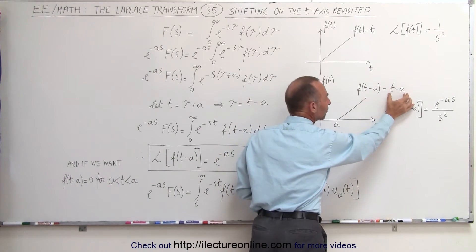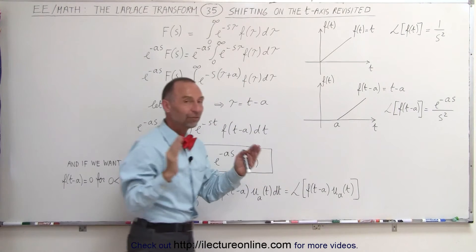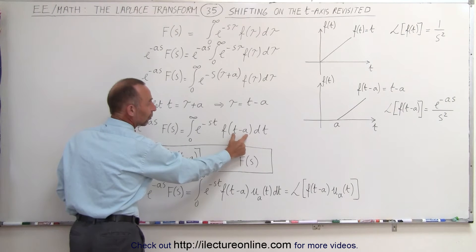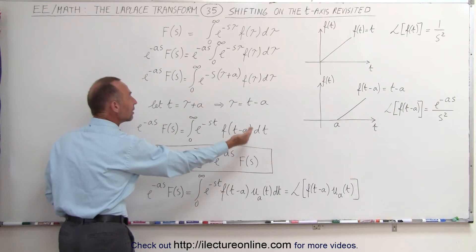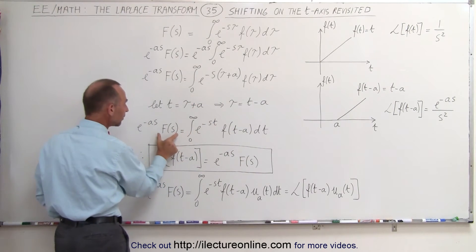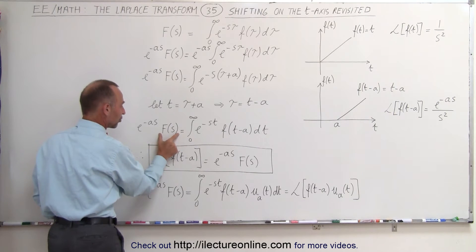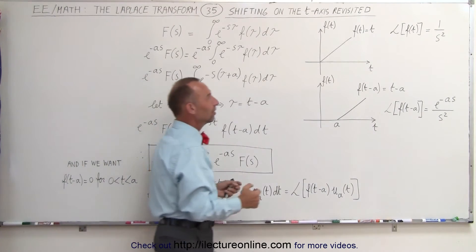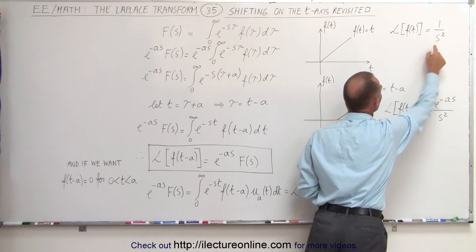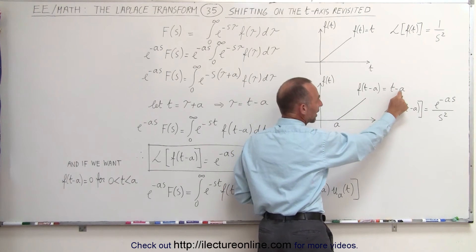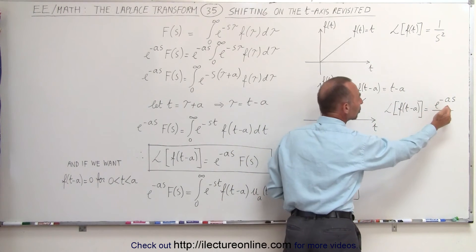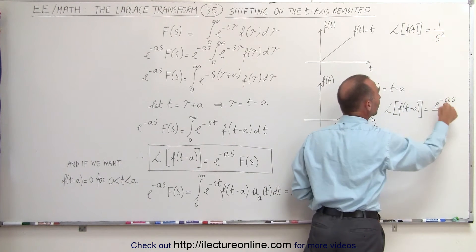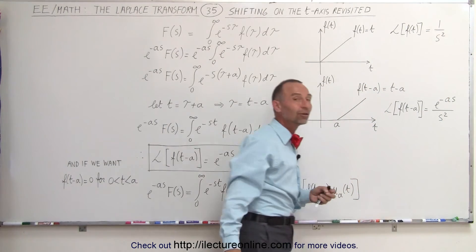Because there's been a shift in the time domain of amount a, we can account for that by saying: if the function has a shift of amount a, that simply means when we take the Laplace transform, all we have to do is take the original Laplace transfer function and multiply it times e to the minus as. In other words, instead of writing one over s squared, if the time domain function is shifted by amount a, all we do is multiply the Laplace transform by e to the minus as. So one times e to the minus as is of course e to the minus as.